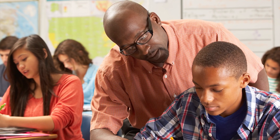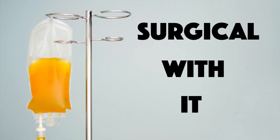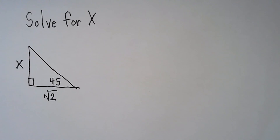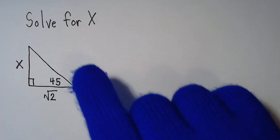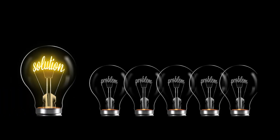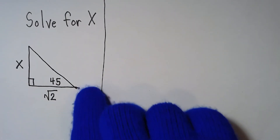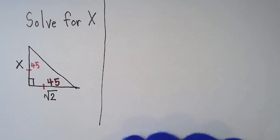Findin' a side, I'ma show you what to do. Surgical with it, you can call me Charles Drew. Practice hard when you learn a lesson, it'll take a grade north like Matthew Henson. Hmm, what do we have here? A special case triangle — it's half of a square. Now do not despair, just pull up a chair, 'cause I'ma show you how to solve this problem right here. Now check the hypotheses: the 45 degrees makes it isosceles.